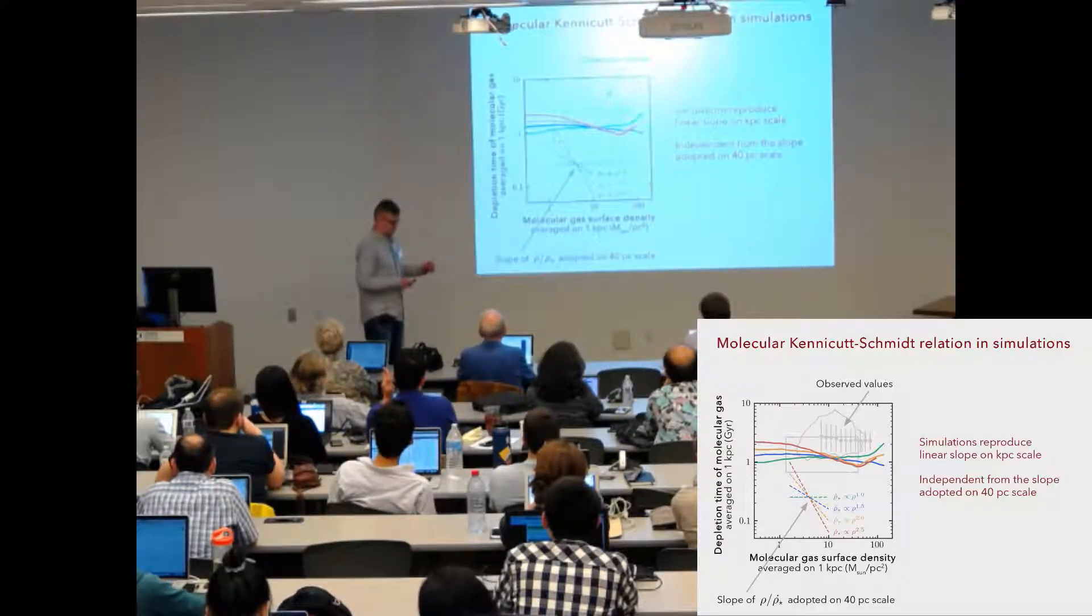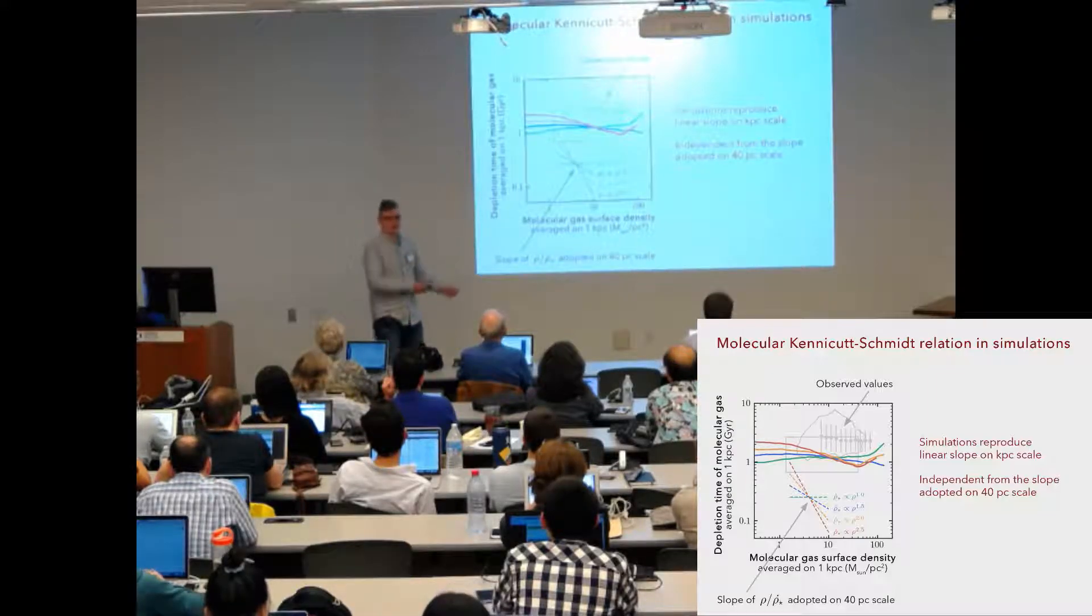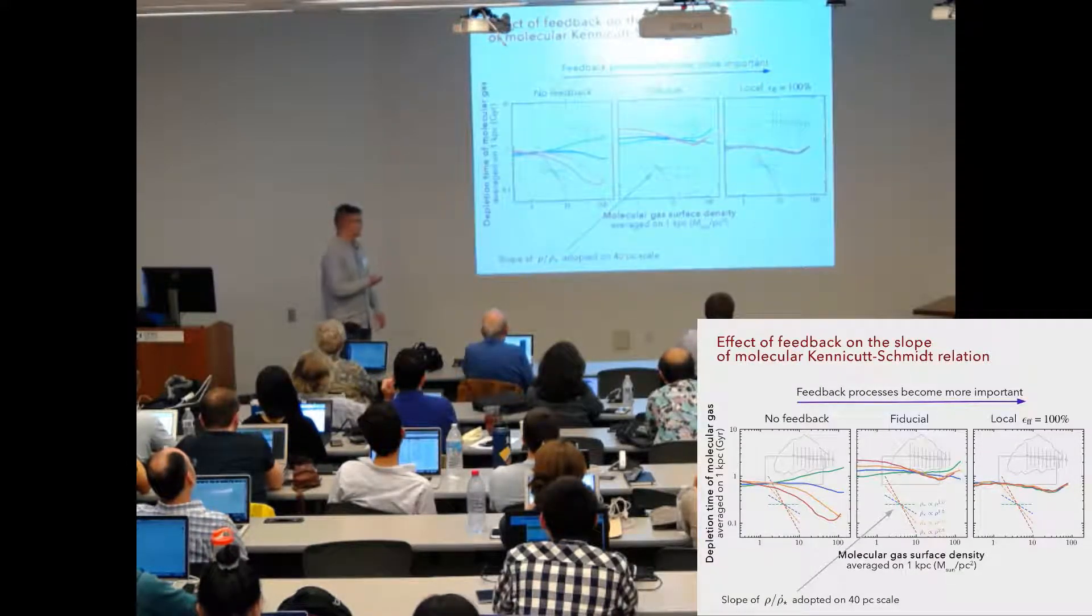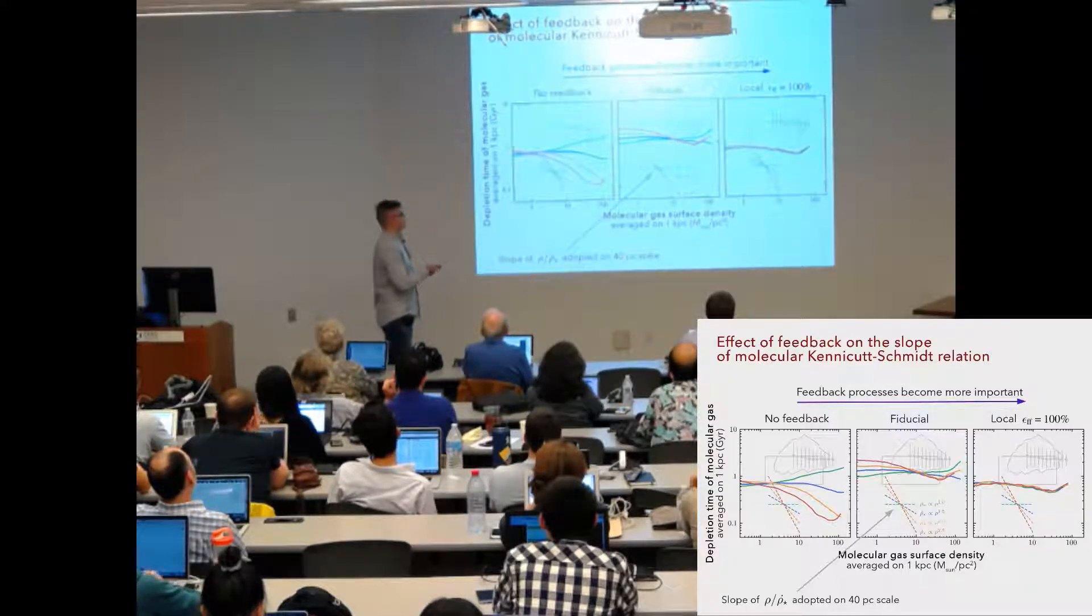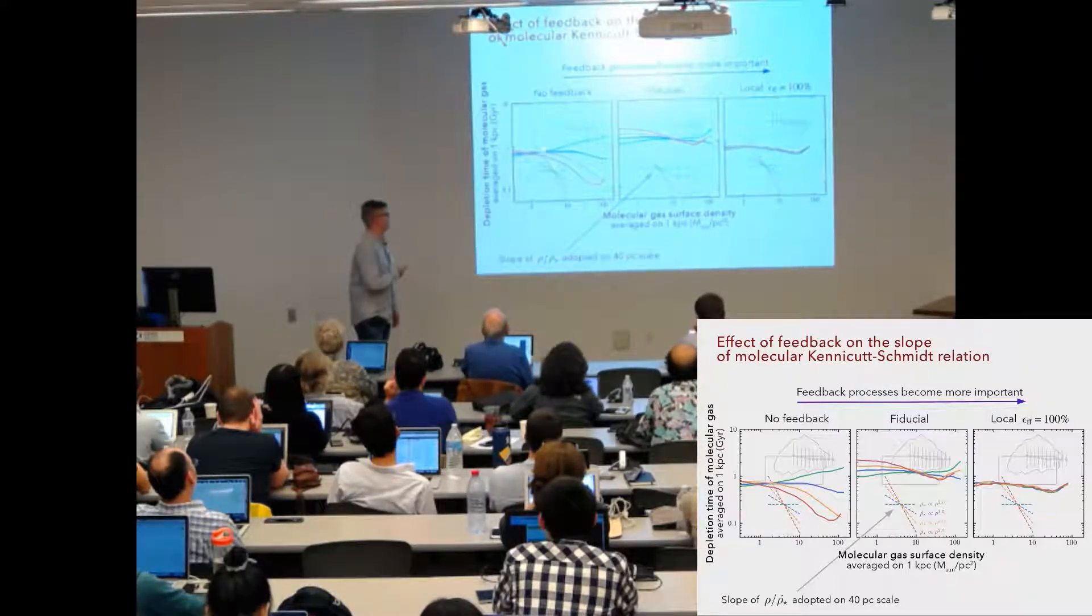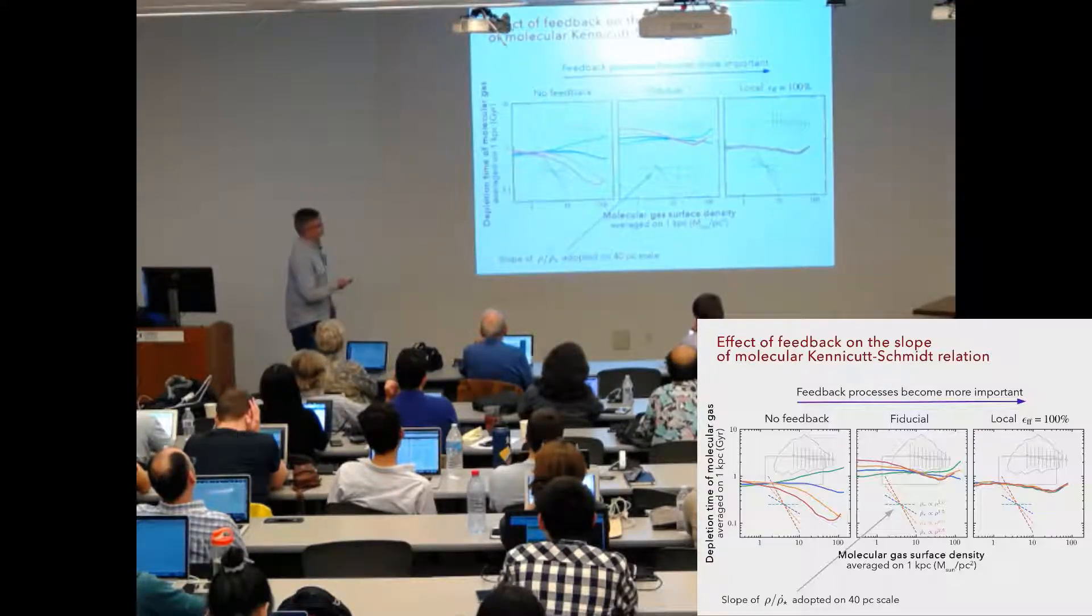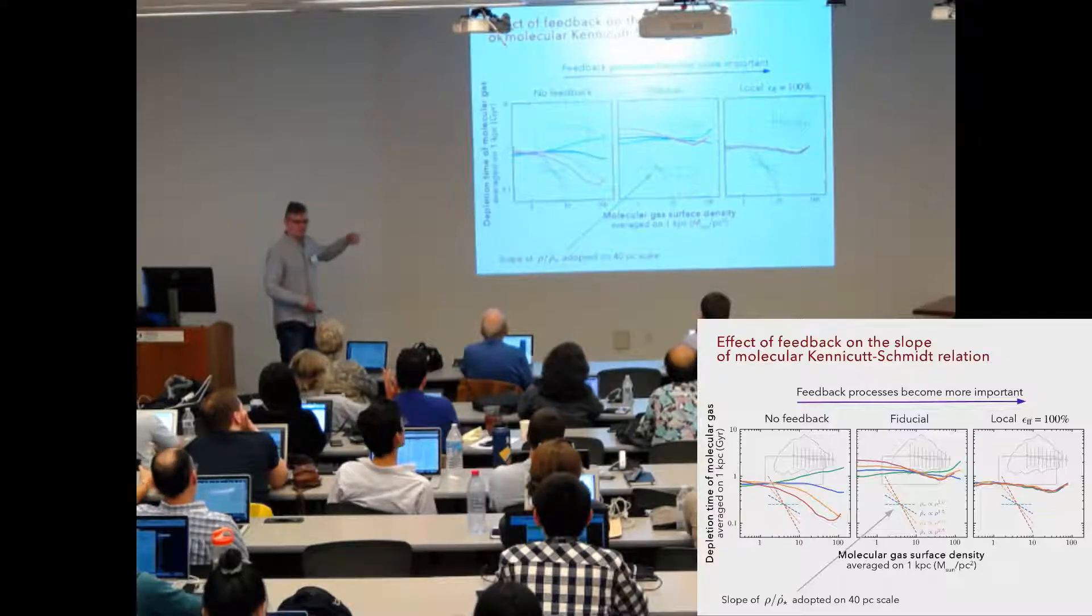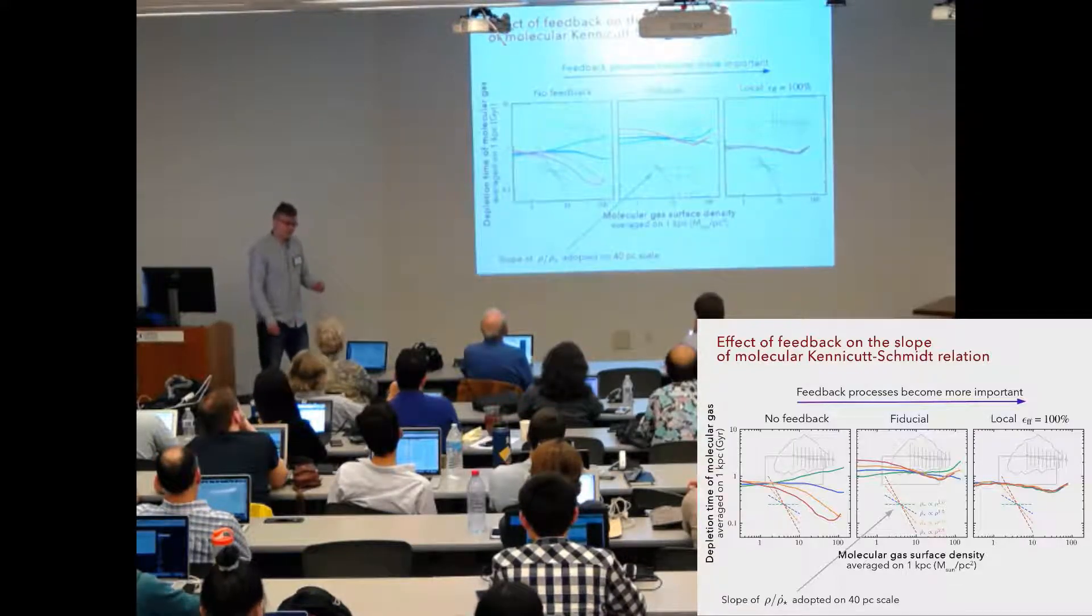And so, we started changing different parameters and, of course, first of all, the first thing to check is feedback because whenever you see something unusual happen in simulations, it's usually because of feedback. And this is not an exception. When we run the same simulations but without feedback, and then we boost the effects of feedback by a factor of 100 by setting local efficiency to 100% instead of 1%, we see that as feedback processes become more important, the dependence of the slope measured on kiloparsec scale on the local assumption becomes weaker. And the value of the slope on kiloparsec scale which feedback regulates is close to linear. It means that the effects of feedback are indeed very important to set the slope of the molecular Kennicutt-Schmidt relation.